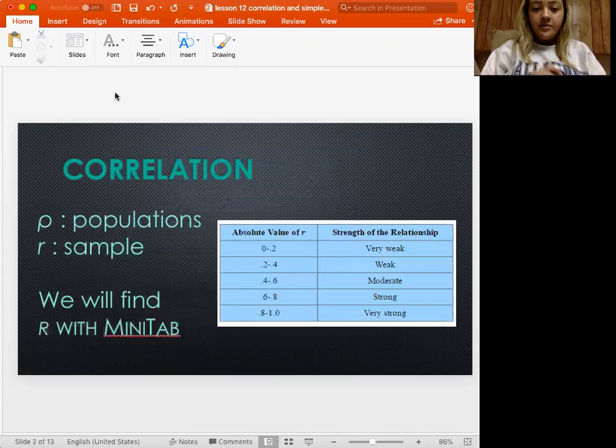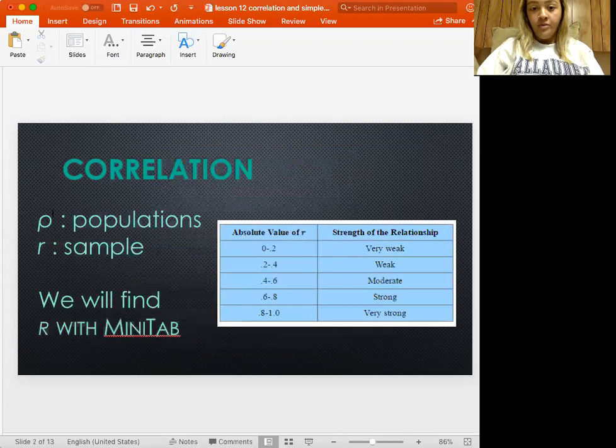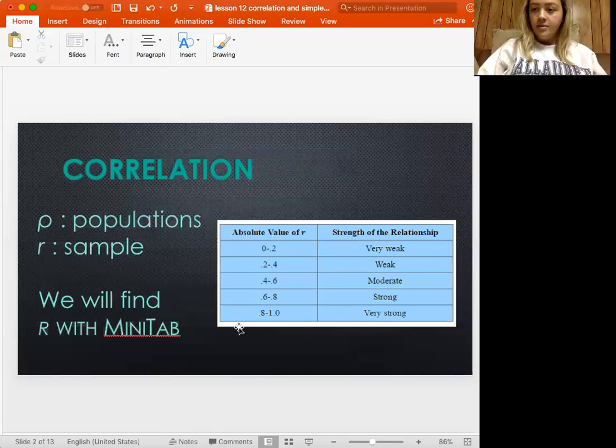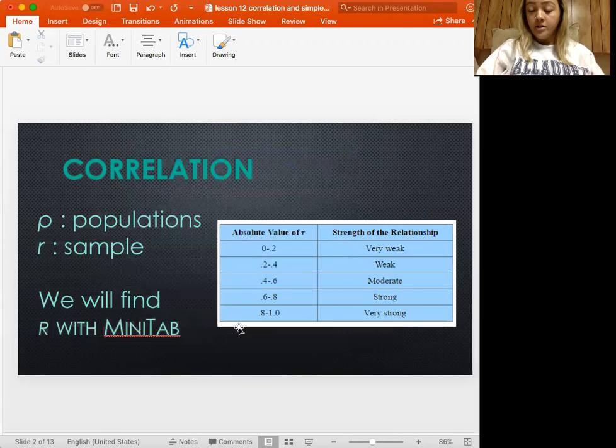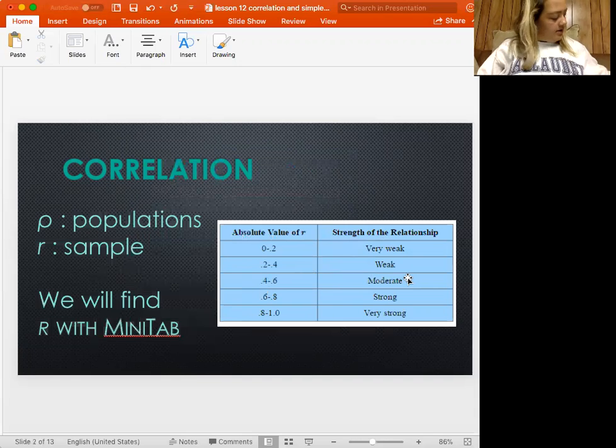So for correlation, remember that this ρ is what we use to talk about population correlation. Remember it's different than our proportion p, so make sure you recognize that. We call this rho, and then this R is going to be our sample correlation. We find that with Minitab, and these are just the different types of R's that you can get. Basically they have to be between 0 and 1, similar to proportions, and this kind of gives you an idea of what each of them means.